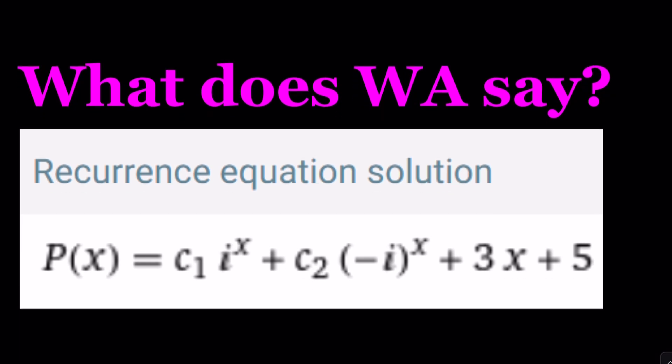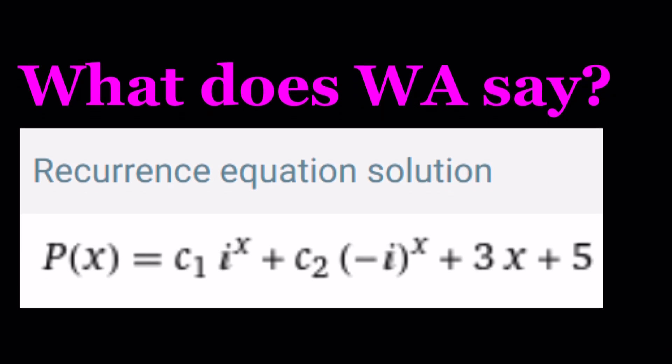Let's go ahead and take a look at the result because I want to know what you think. What does Wolfram Alpha say? Ta-da! It says c₁(i)^x + c₂(-i)^x + 3x + 5.